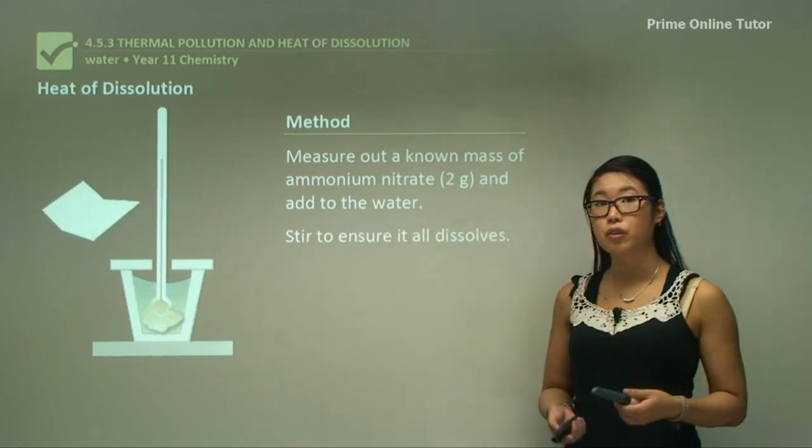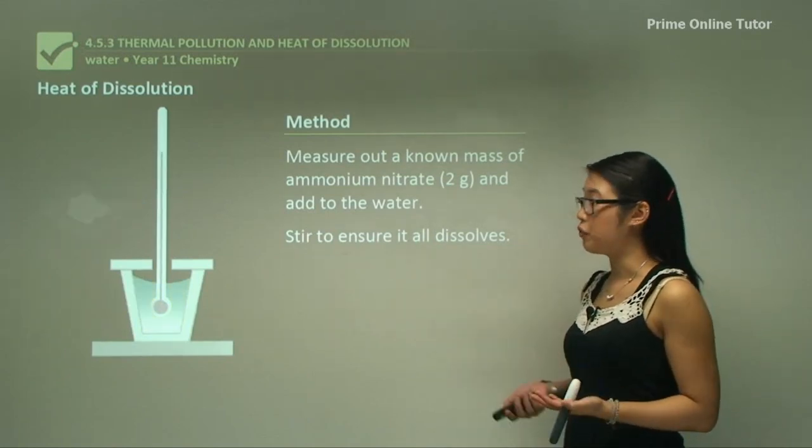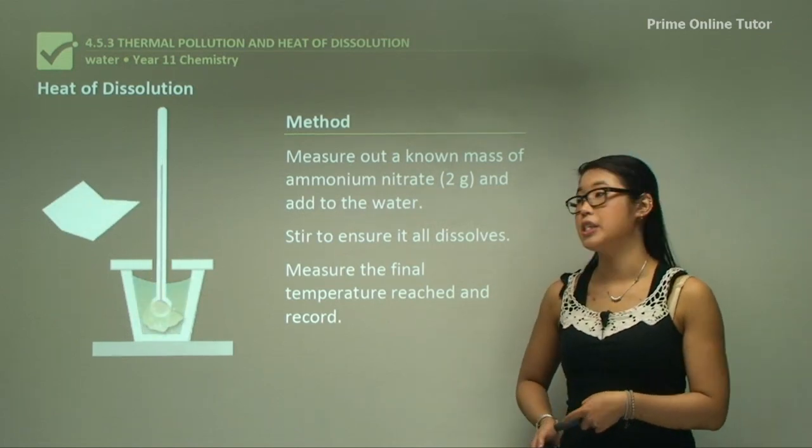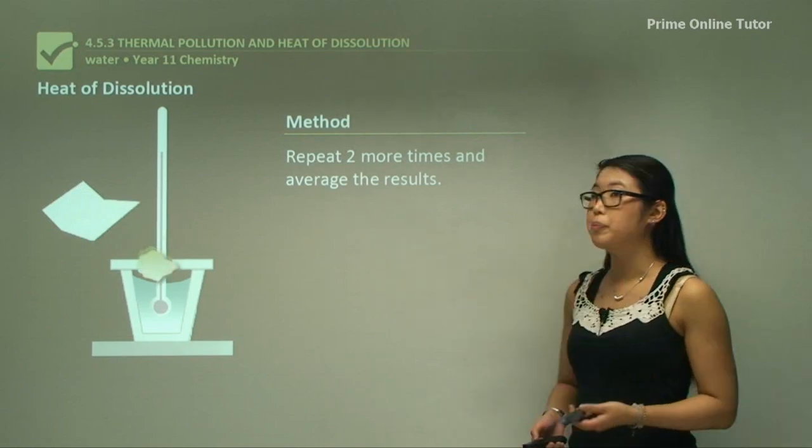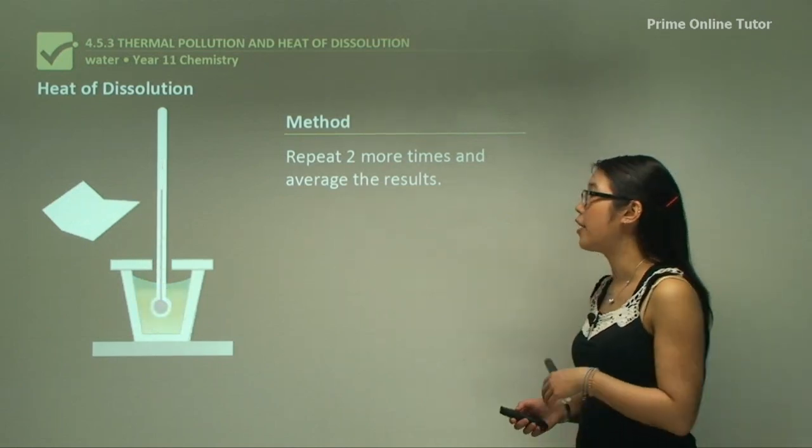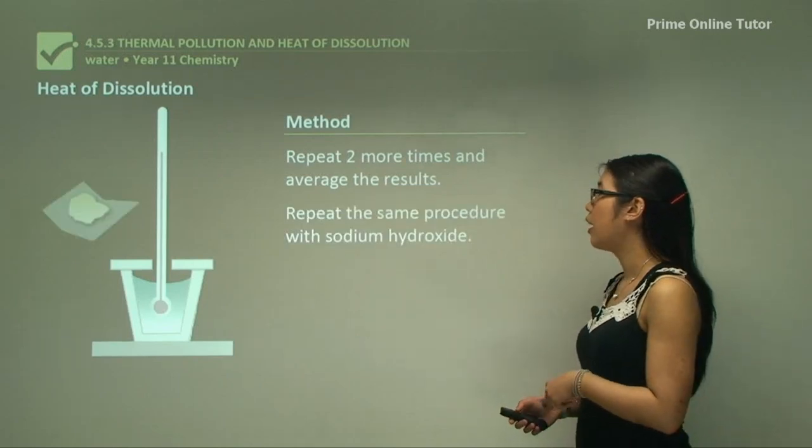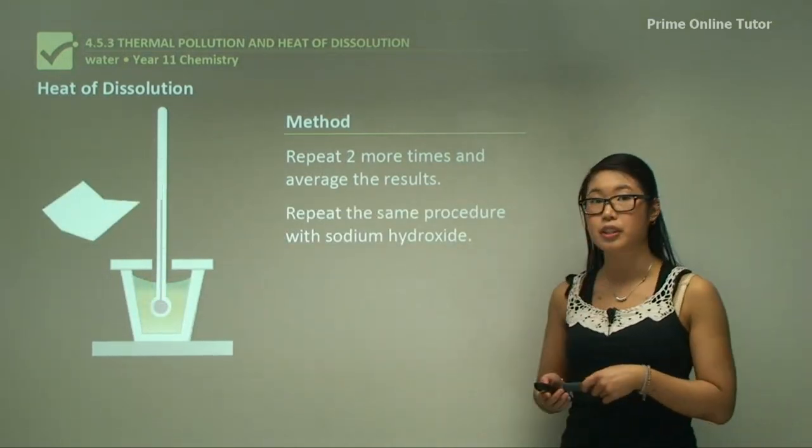We stir to make sure it all dissolves and the whole thing is dissolved and uniform. And then measure the final temperature and record it down as well. We then need to repeat this two more times and average the results to make sure we get reliable results. Then we have to repeat the same procedure with the sodium hydroxide.